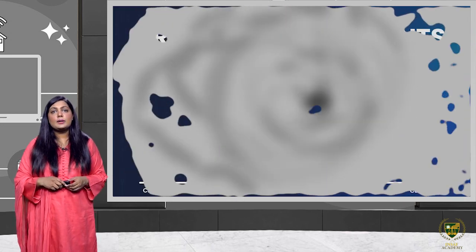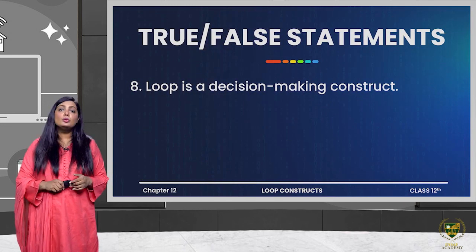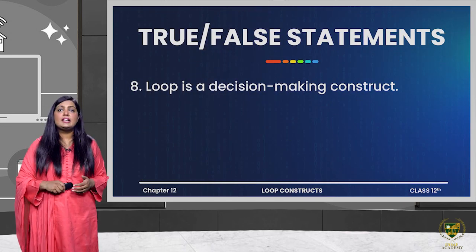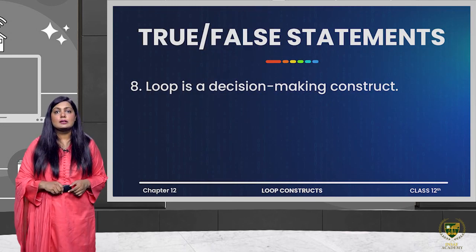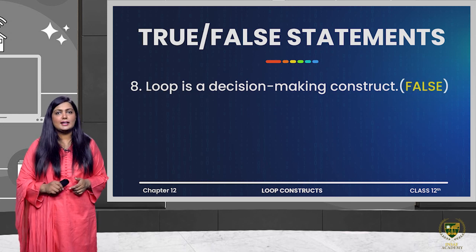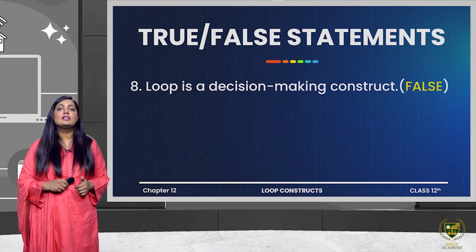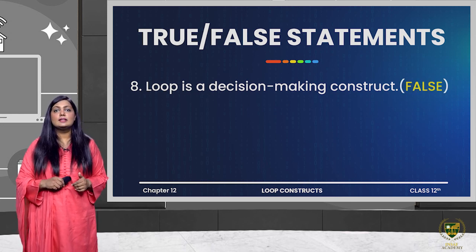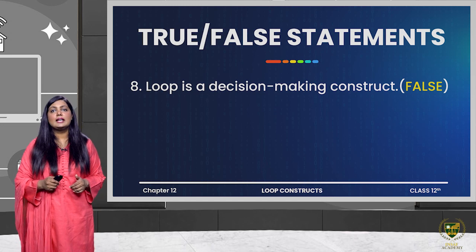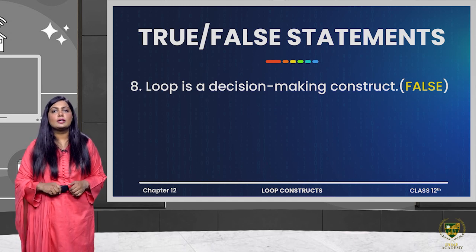The next question: a loop is a decision-making construct — it is not; it is a repetitive construct. So this statement is false.